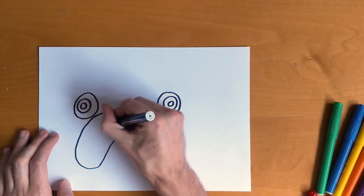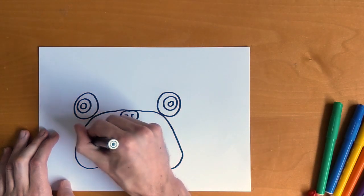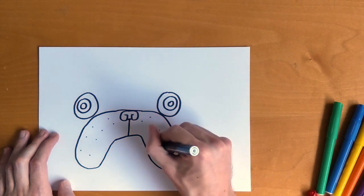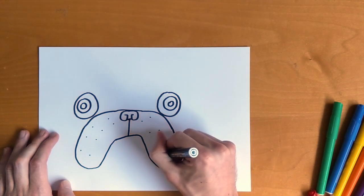Now we're going to draw eight whiskers on one side and eight whiskers on the other side—dot, dot, dot, dot, dot, dot, dot. You can do as many whiskers as you like.